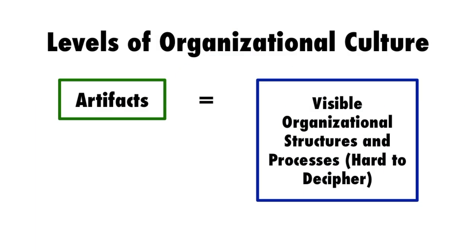The artifacts, according to Schein, are the visible organizational structures and processes. Even though they're visible and easy to point to, they're very hard to decipher. For example, if your organization is structured as a chain-of-command hierarchy versus a team-based pattern, it's not easily decipherable what that means at a deeper level. You can see an assembly line, but what does that mean deeper down? The meaning is not apparent — you have to spend time drilling down past the level of artifacts to understand the values that go underneath them.